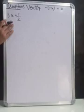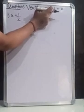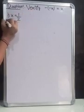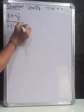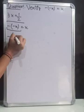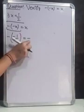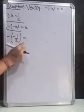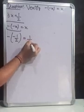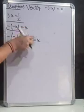Now there is one more type: verify that minus of minus x is equal to x. If x is 1/2, solve the left-hand side: minus of bracket minus 1/2. This equals minus as it is, and then minus minus cancels, giving plus 1/2, which is simply 1/2. This is the same as x. So we have verified that minus of minus x equals x.